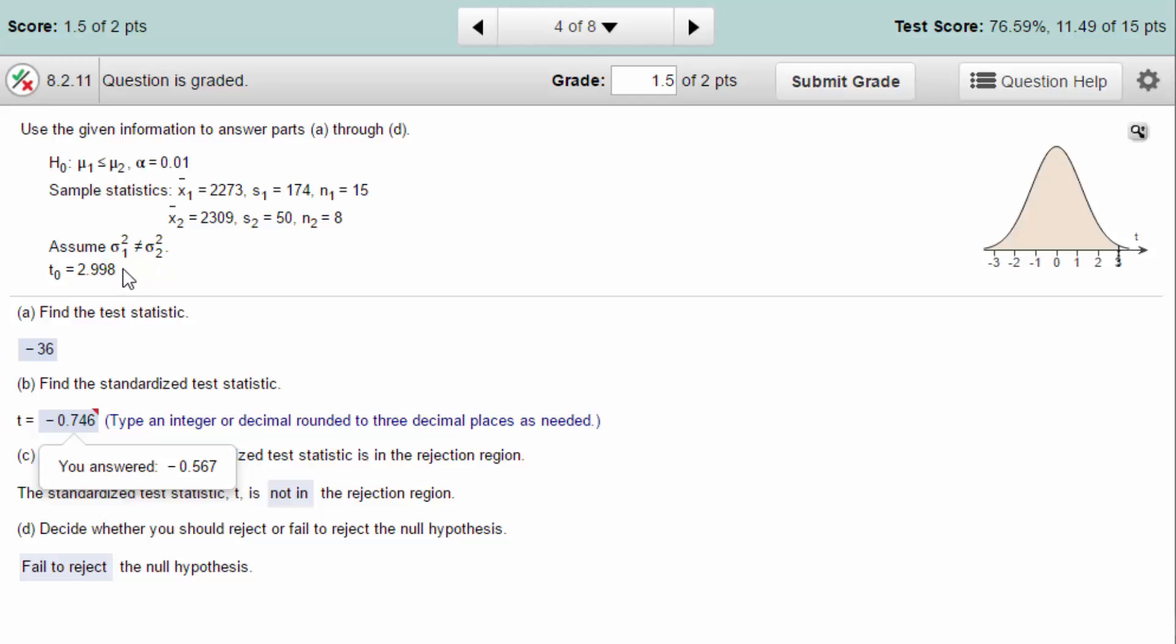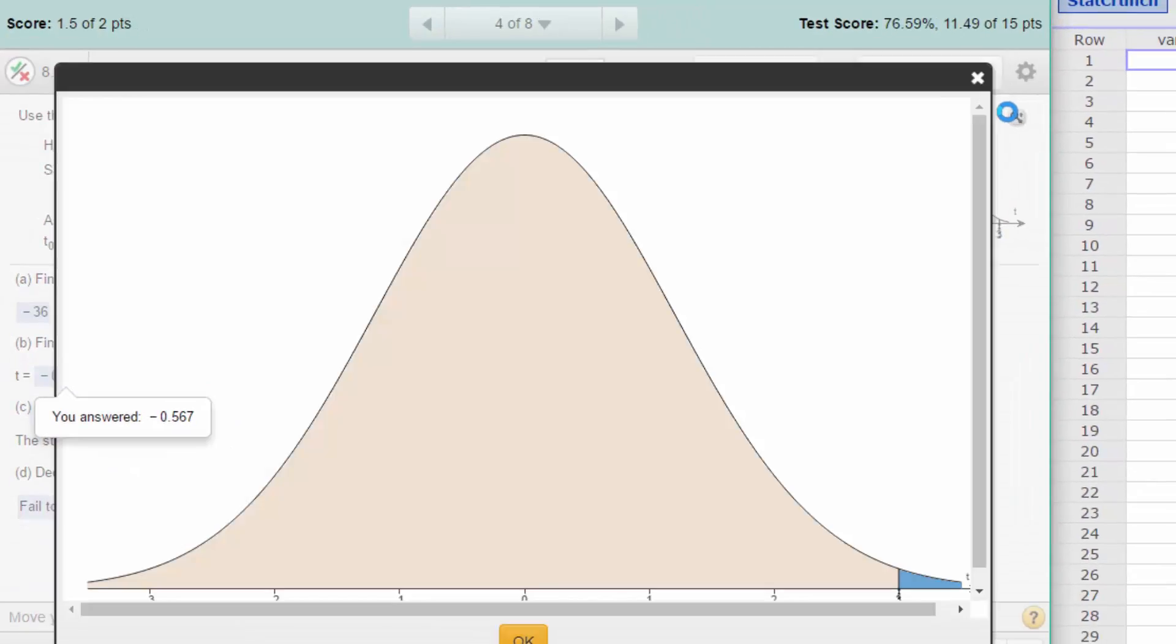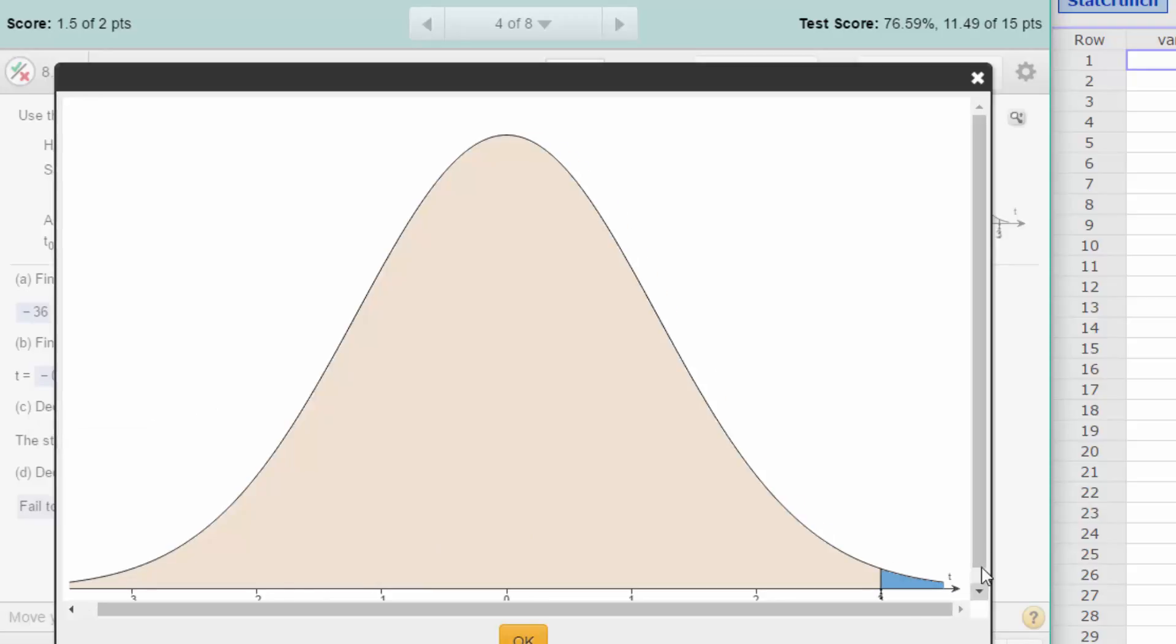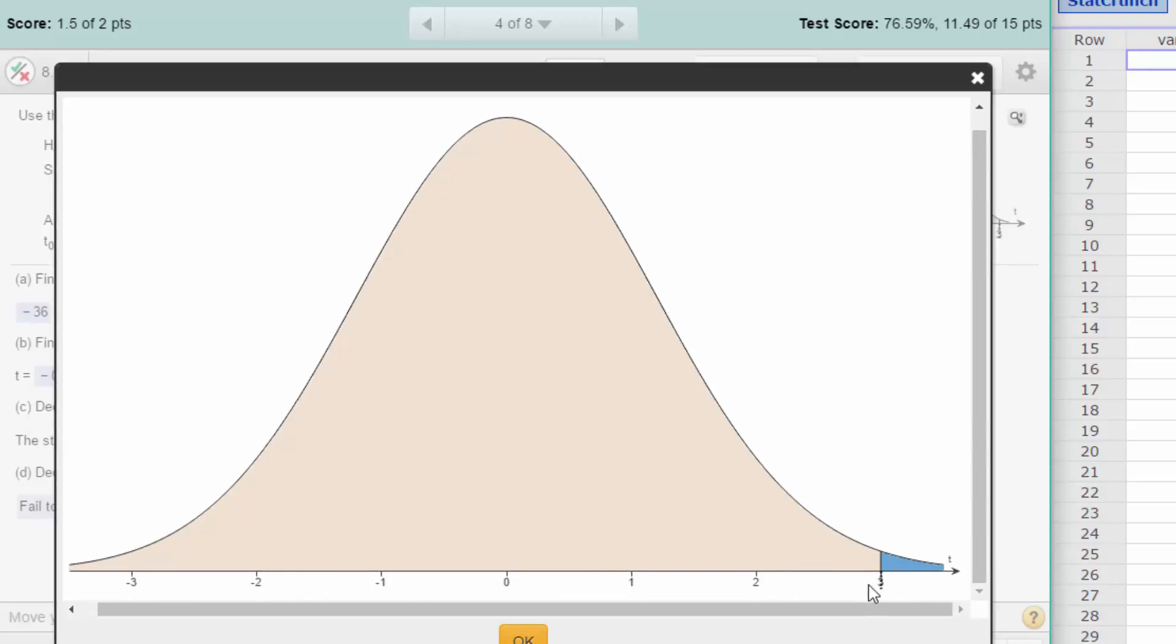Now they do give you the critical value of t of 2.998. If we blow this curve up a little bit we see over here to the far right at three standard deviations we've got a blue area for some reason instead of a red area, but that's the rejection area, everything to the right of that 2.998.